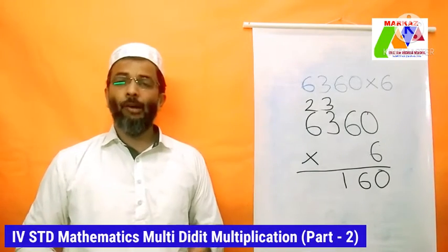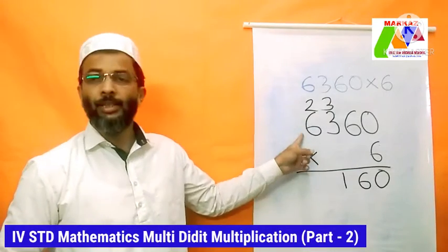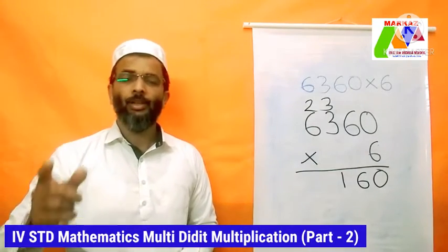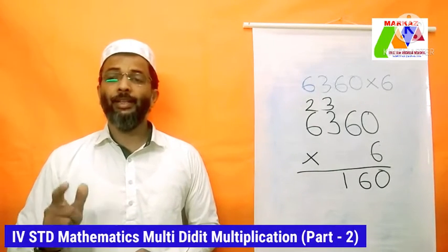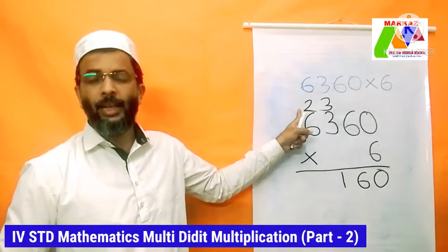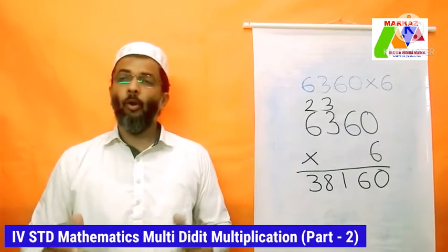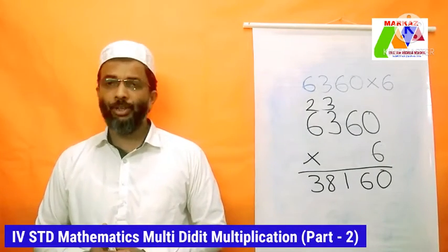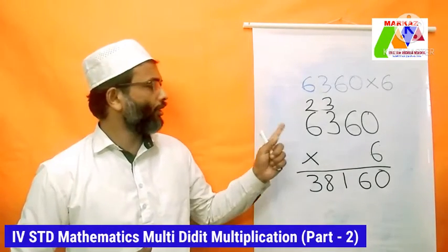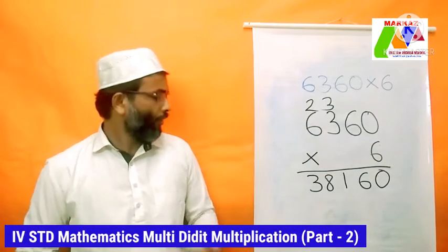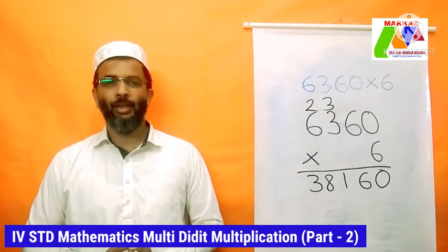Our fourth and last multiplication step: 6 × 6 = 36. But again there is the digit we carried: 36 + 2 = 38. We have done all four multiplication steps and the answer to our problem — 6 × 6,360 = 38,160.